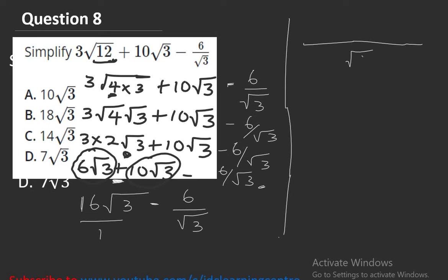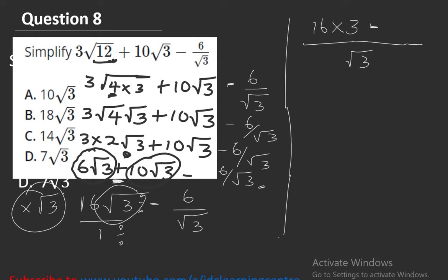The LCM of 1 and root 3 is root 3. Multiplying through: 16 root 3 times root 3 over root 3 gives 16 times 3 equals 48, and 6 over root 3 times root 3 over root 3 gives 6. So we have (48 minus 6) over root 3 equals 42 over root 3.